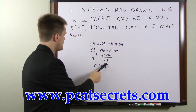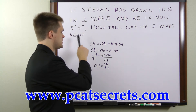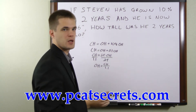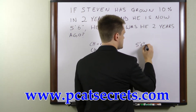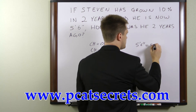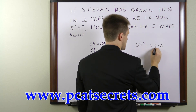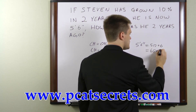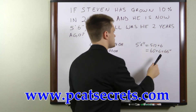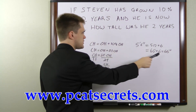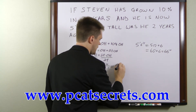Now the current height is given to us in feet and inches, so we need to convert this just to inches before we plug it in here. So 5 feet and 6 inches is equal to 5 times 12 plus 6. That is 60 plus 6, which is 66. So Stephen is 66 inches currently and we need to divide it by 1.1 to get his original height.